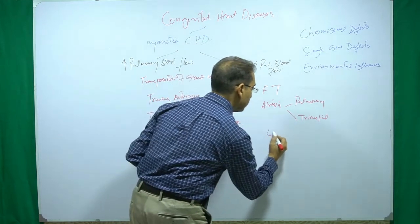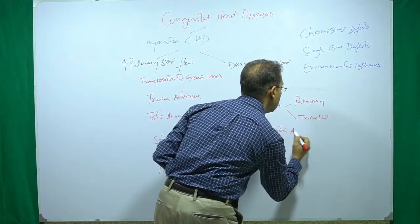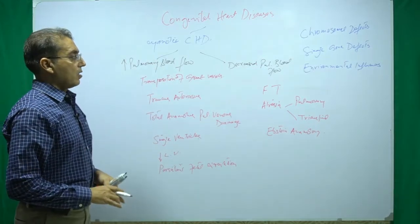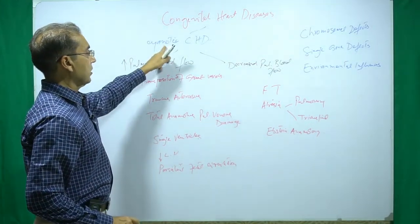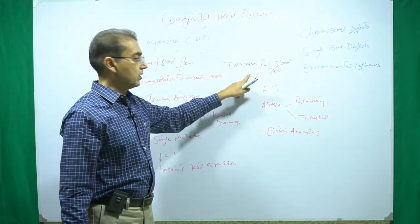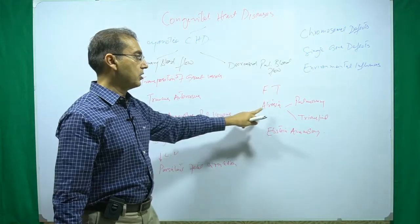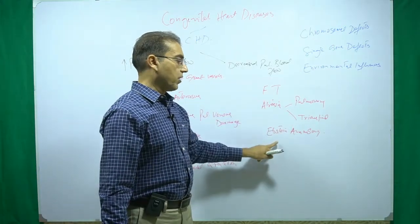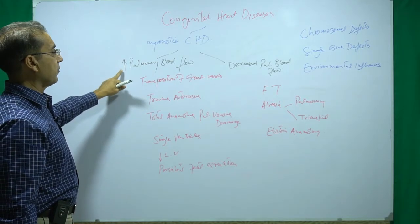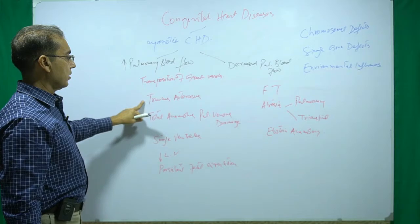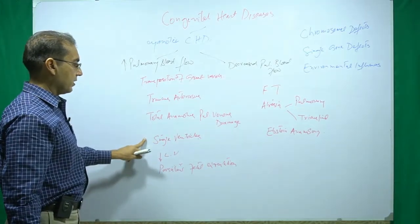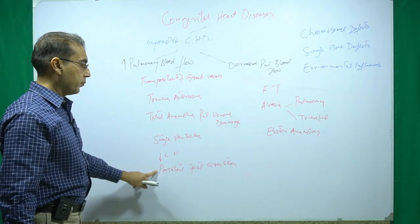To summarize, in cyanotic congenital heart disease, when chest X-ray shows increased pulmonary blood flow, we consider transposition of the great vessels, truncus arteriosus, total anomalous pulmonary venous drainage, single ventricle, hypoplastic left ventricle, and persistent fetal circulation. When there is diminished pulmonary blood flow, the commonest lesion is tetralogy of Fallot, followed by pulmonary or tricuspid valve atresia, and Ebstein anomaly — in which the right atrium is positioned abnormally.